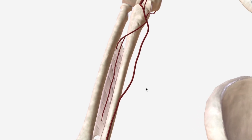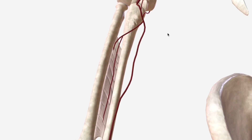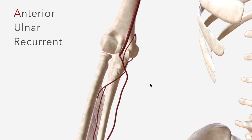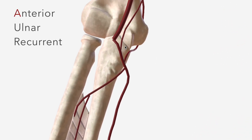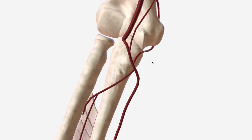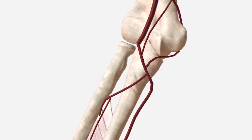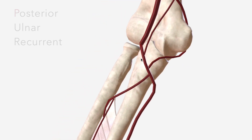We start off with the anterior ulnar recurrent, which anastomoses with the posterior ulnar recurrent to contribute to the supply of the elbow joint.